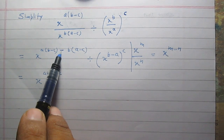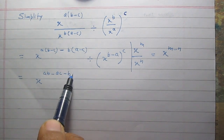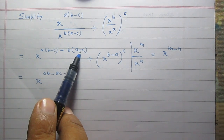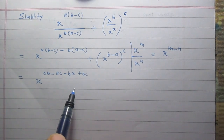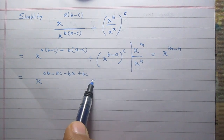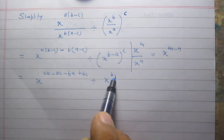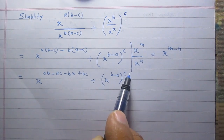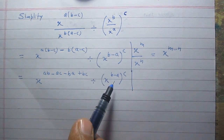Minus b is multiplying with a, so it is minus ba, then minus b is multiplying with minus c, so it is plus bc. So that is all about the first part. The second part, with division sign, is x raised to the power b minus a, whole raised to the power c.